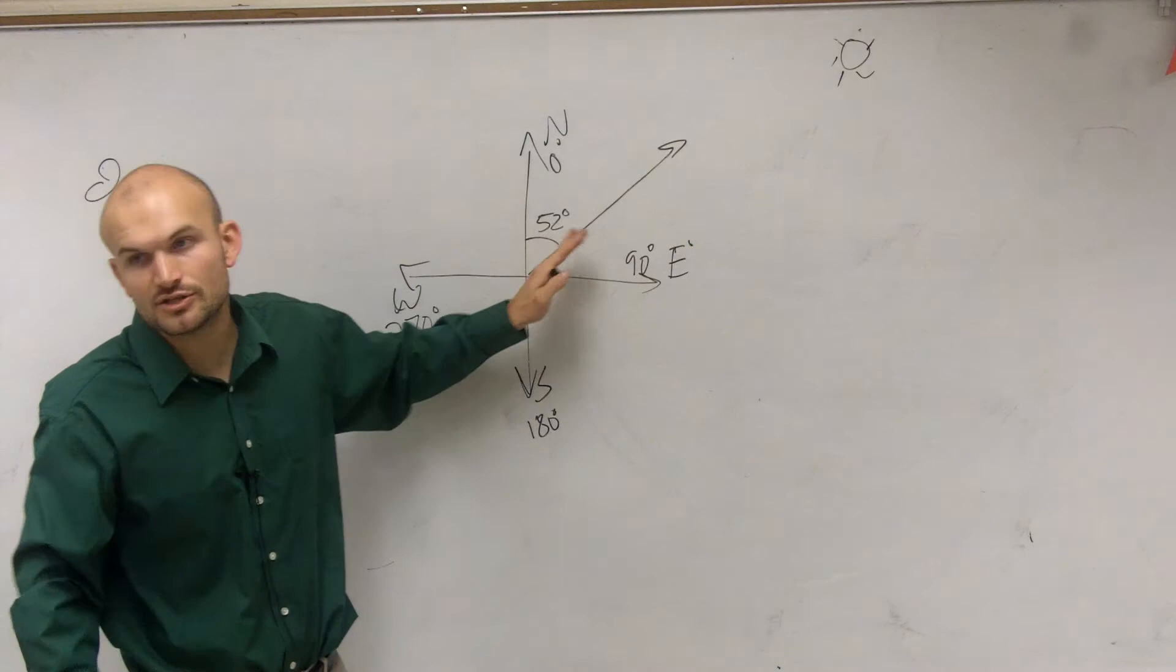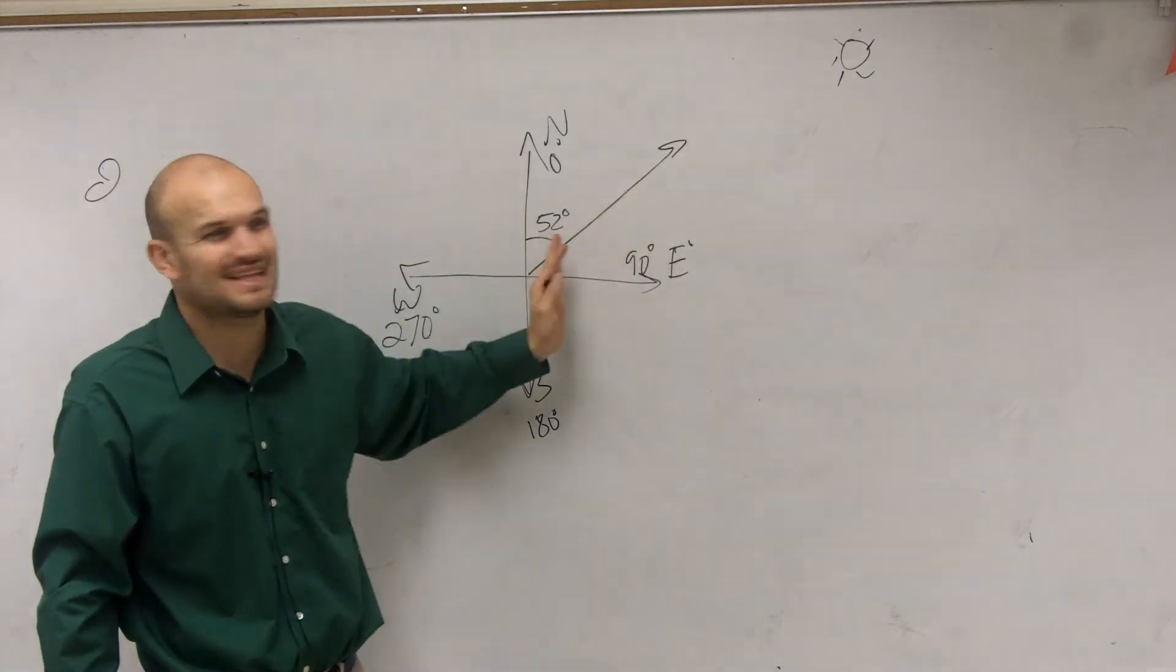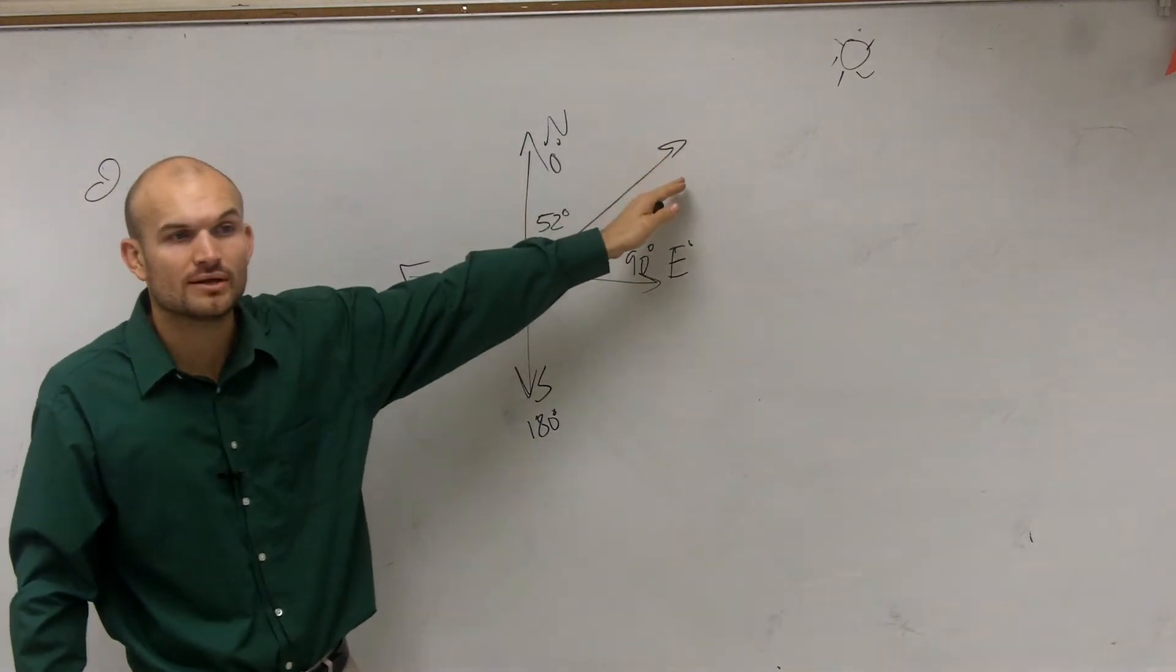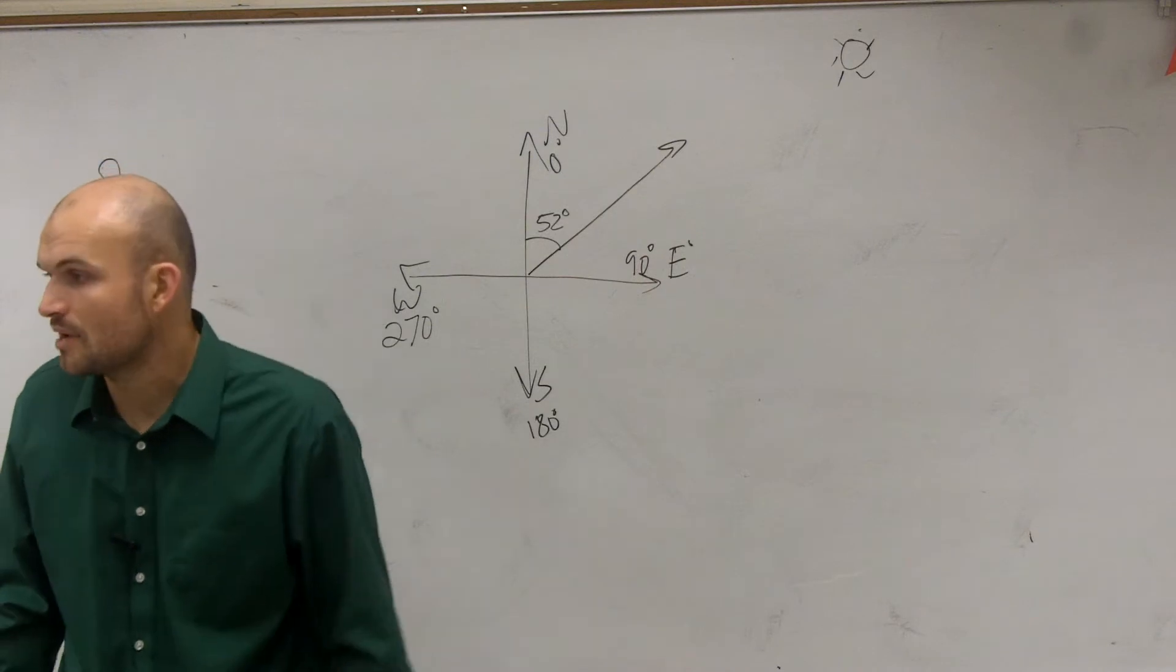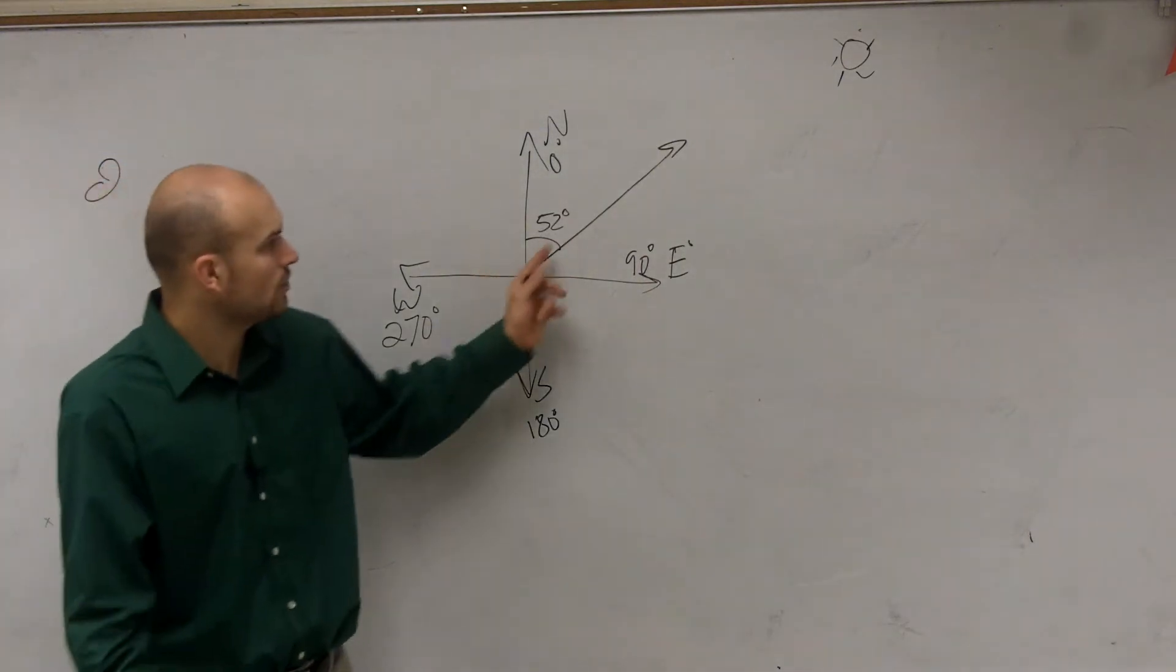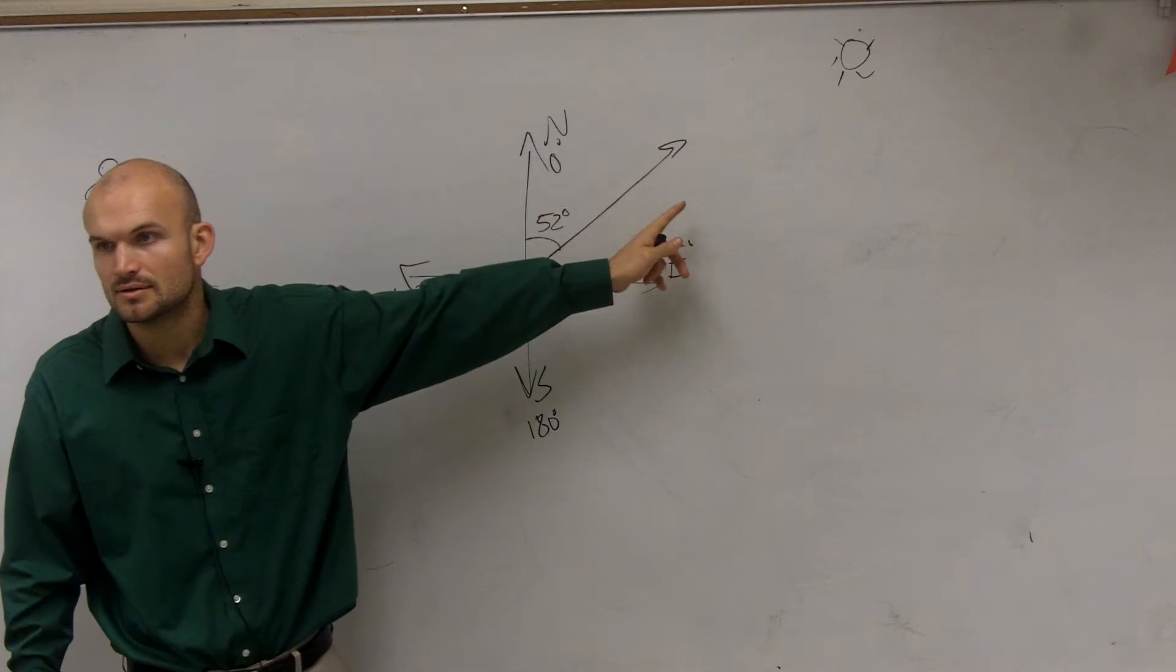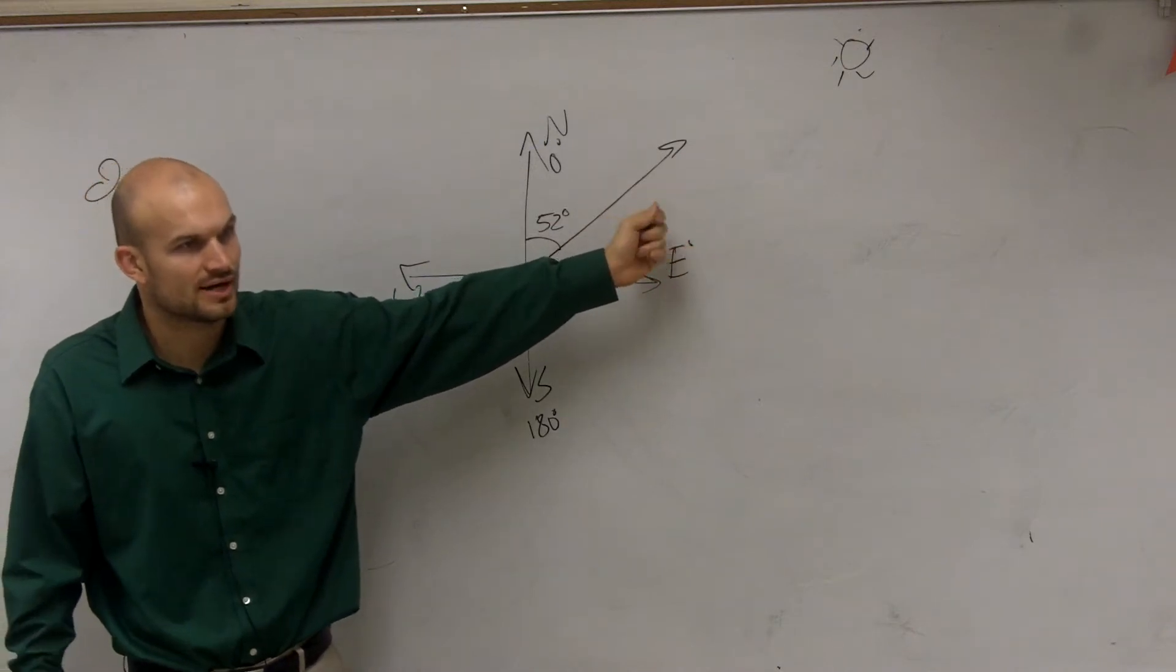So what we need to do is determine the length of how far the plane is going. It says it's going 600 miles per hour. So if we travel for one hour, how long would this line be? 600 miles, right?